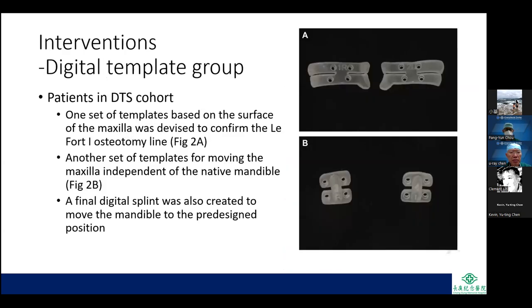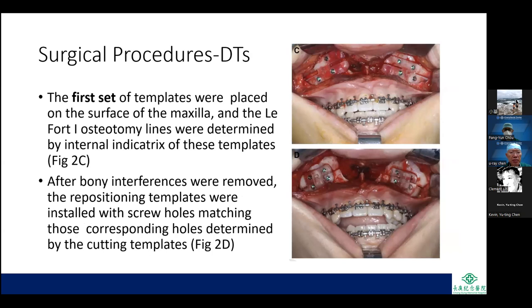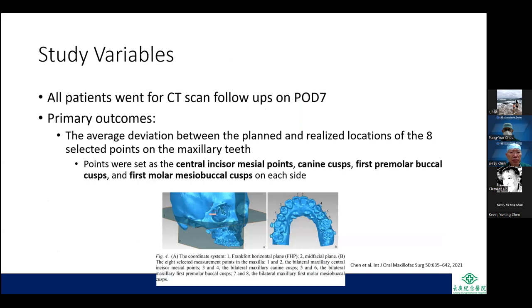In the digital template group, one set of templates based on the maxilla surface confirmed the Le Fort I osteotomy line, and another set moved the maxilla independently of the native mandible. A final digital splint moved the mandible to the pre-designed position. The first set of templates was placed on the maxilla surface, osteotomy lines were determined by the internal guides, and after removing bony interferences, repositioning templates were installed with screw holes matching those from the cutting templates. All patients had CT scanner follow-ups on post-op day 7.